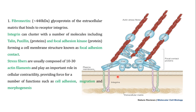Fibronectin is a ~440 kDa glycoprotein of the extracellular matrix that binds to the integrin receptor. When fibronectin binds to the integrin receptor — here is the extracellular matrix and here is the integrin receptor — what this does is recruit specialized proteins on the interior of this receptor known as paxillin and talin. These paxillin and talin recruit another important kinase known as focal adhesion kinase (FAK). When FAK interacts with paxillin and talin, it undergoes autophosphorylation — meaning it phosphorylates itself.